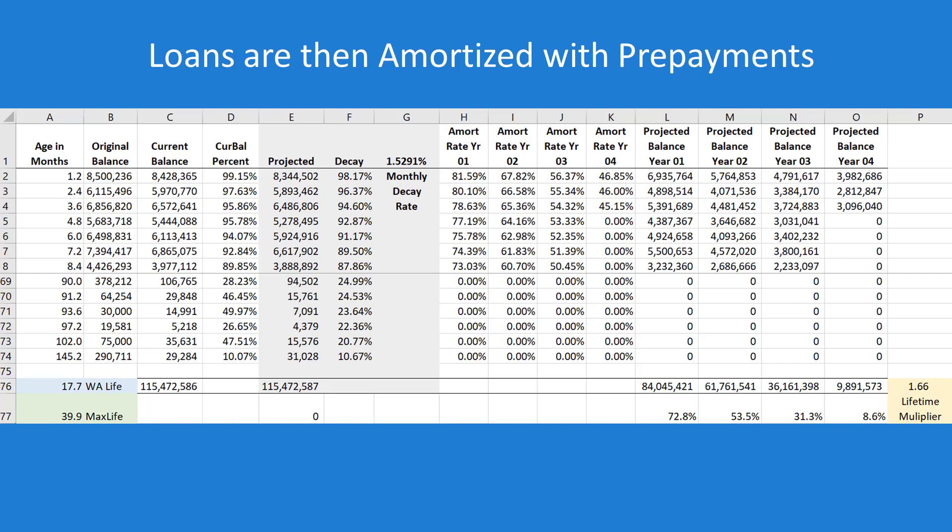The next thing is how long these loans are going to be on the books. We take car loans, first deeds of trust, and similar instruments to come up with a decay rate. We break your whole portfolio into layers by the age of their months — the original amount, the current balance, and the monthly decay rate within your internal portfolio. We then develop a formula: take your original balance, multiply it by the number of months on the books, and in this case it amortizes at a little more than one and a half percent a month, essentially replicating the exact way your portfolio is behaving. That is the decay rate of your portfolio.